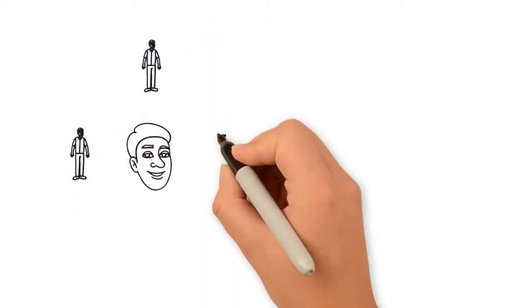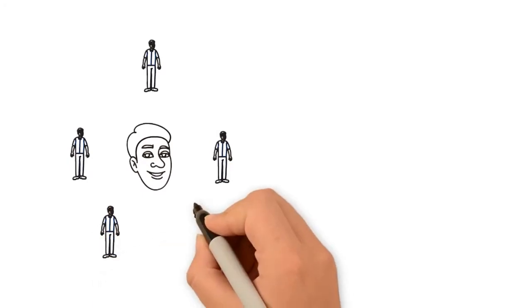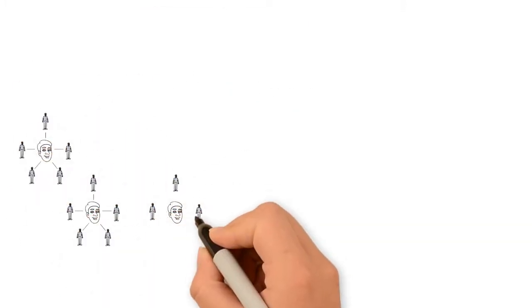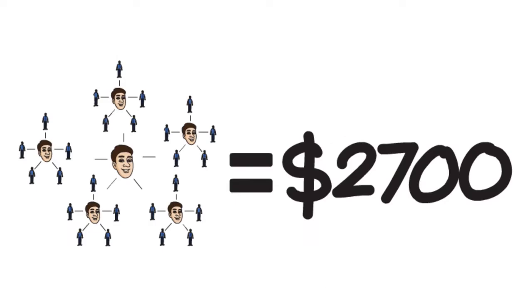Oscar explained that if he shared the gold pack with five more people, he would make $725 and double his mining power. This would increase his daily return, and if those five people shared it with a further five people, he would make another $2,700 and so on.